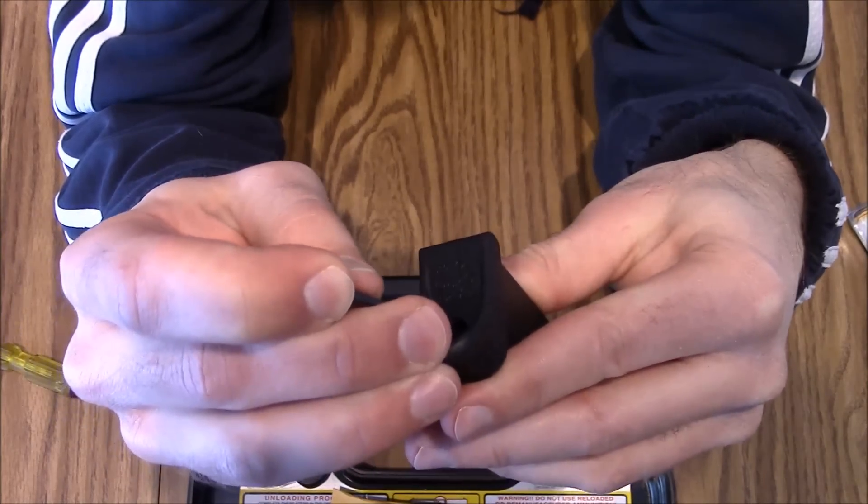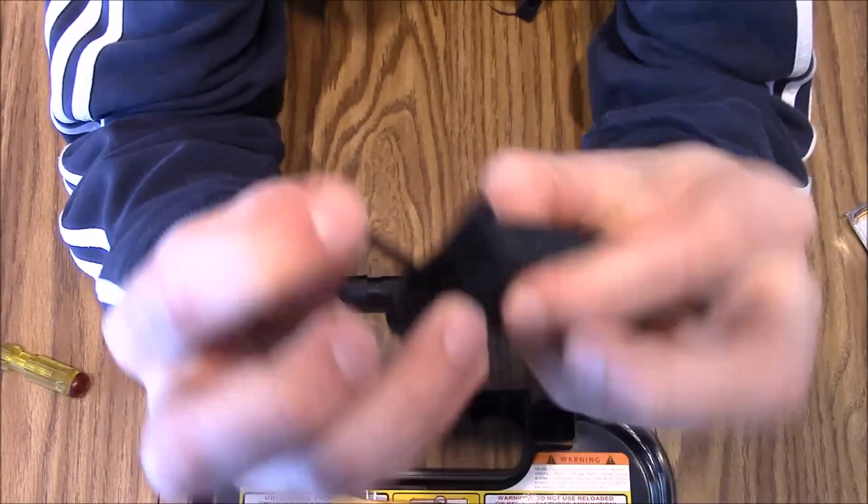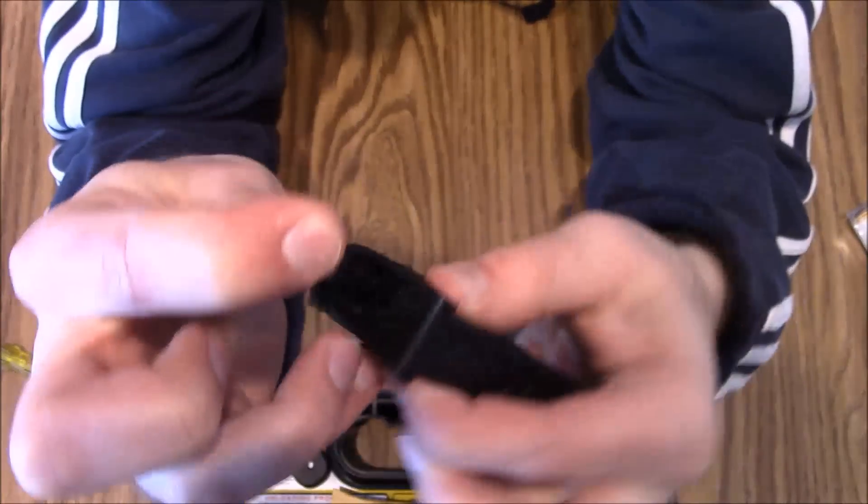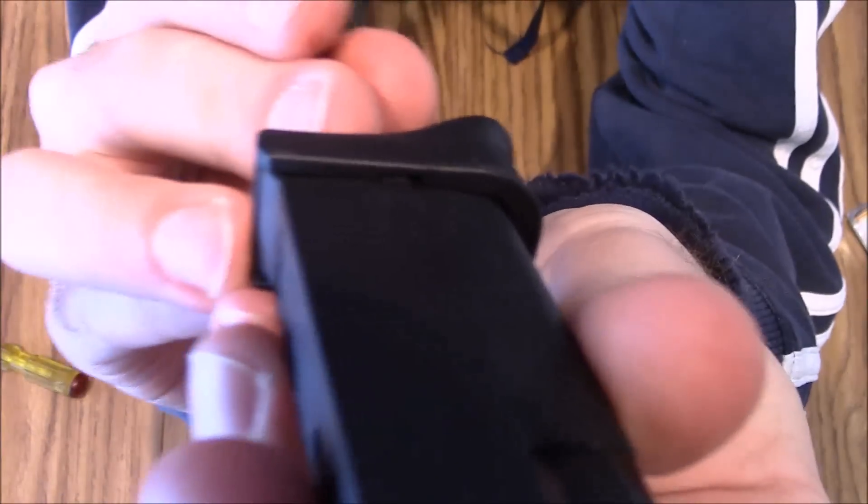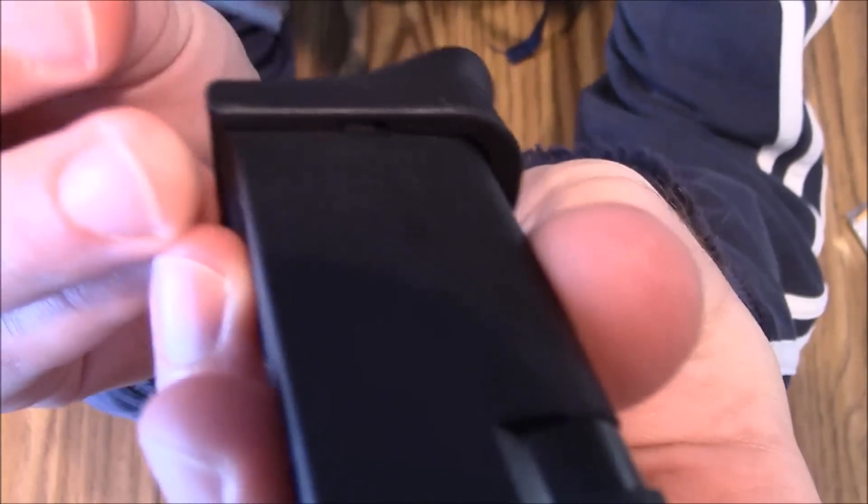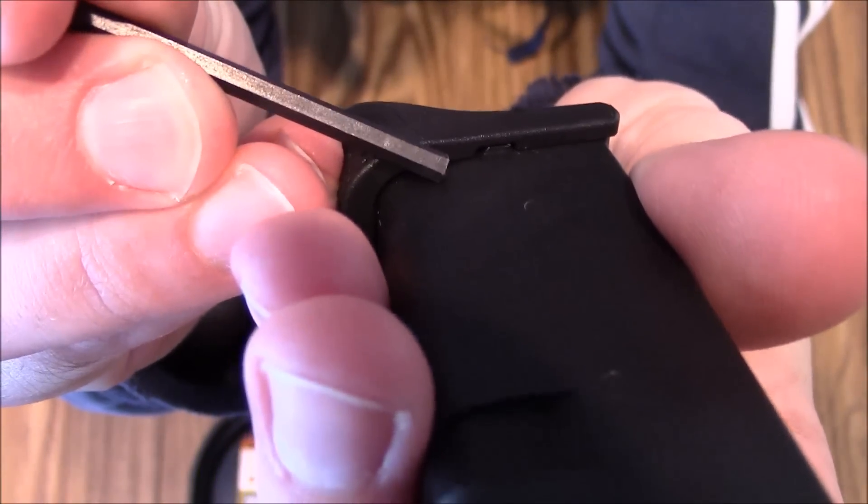Push it down to get the spring out of the way, and then you squeeze both sides of the magazine because each side has a little tab. You can see that there, a little tab, a little tab on that side also. That's what keeps it in place so it doesn't slide out.